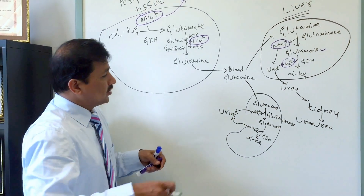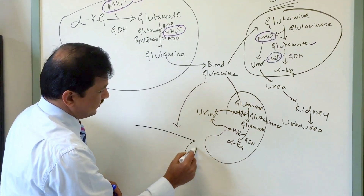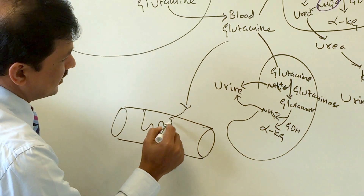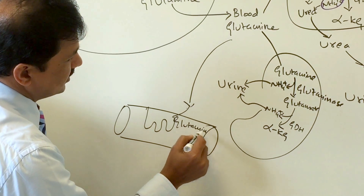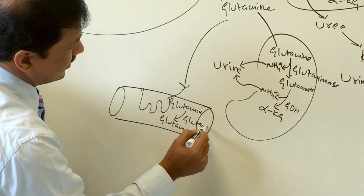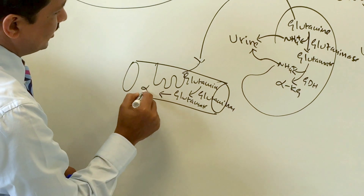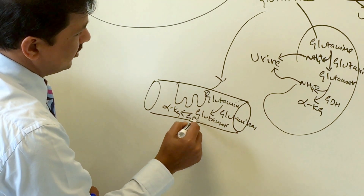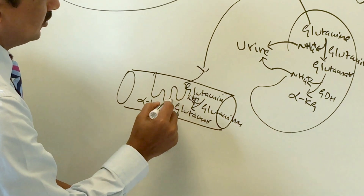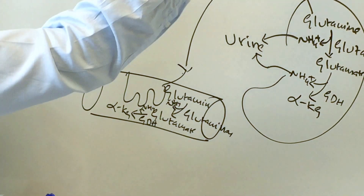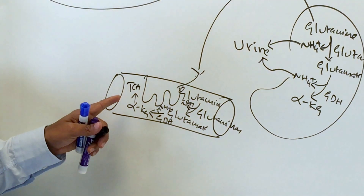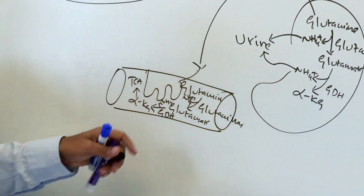Some blood glutamine is also taken up by the intestine. The intestine breaks glutamine into glutamate via glutaminase, and glutamate is further converted to alpha-ketoglutarate by glutamate dehydrogenase, releasing ammonium ions that enter the portal circulation and are carried to the liver. The alpha-ketoglutarate enters the TCA cycle to generate energy — that is the purpose of glutamine uptake by the intestine.